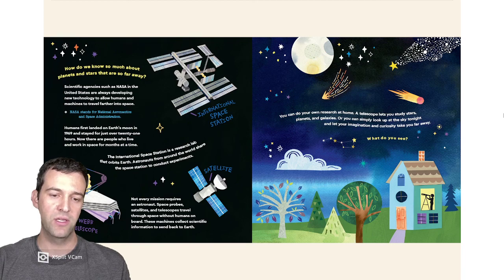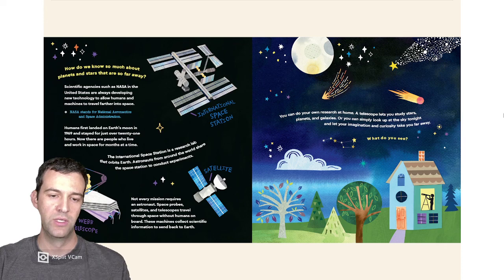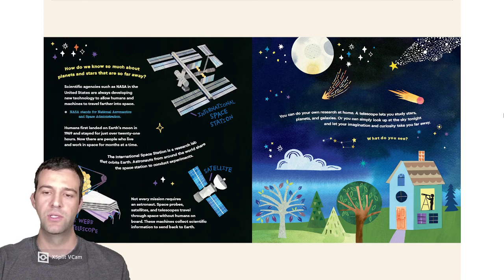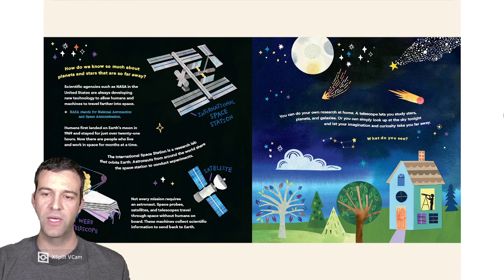Not every mission requires an astronaut. Space probes, satellites, and telescopes travel through space without humans on board. These machines collect scientific information to send back to Earth. You can do your own research at home. A telescope lets you study stars, planets, and galaxies. Or, you can simply look up at the sky tonight and let your imagination and curiosity take you far away. What do you see?